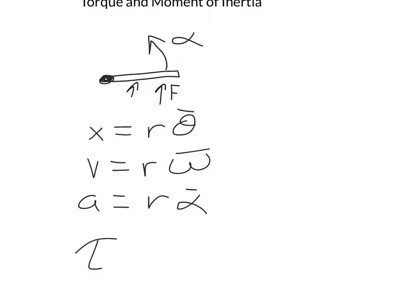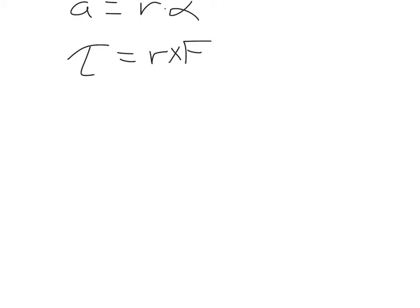This is where it breaks from the pattern we saw before. For all your angular quantities before, you had linear on the left equal to r times the angular quantity. For torque, it's the exact opposite. It's equal to the radius times the linear quantity. It's not a dot product, it's a cross product. It's r cross F. That x is not a variable, it's a function.